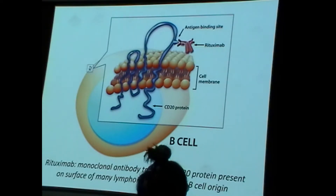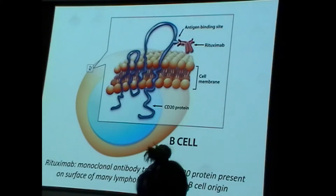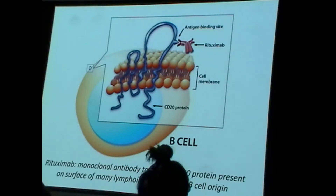A significant side effect of rituximab is that your B-cell numbers will be low, resulting in susceptibility to infections — since you're eliminating the B-cells that produce antibodies.